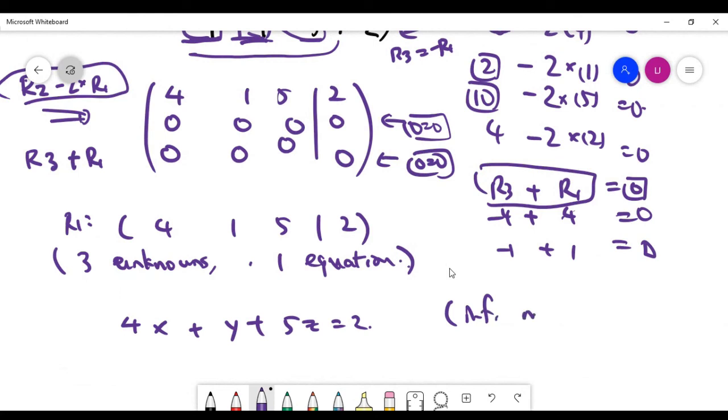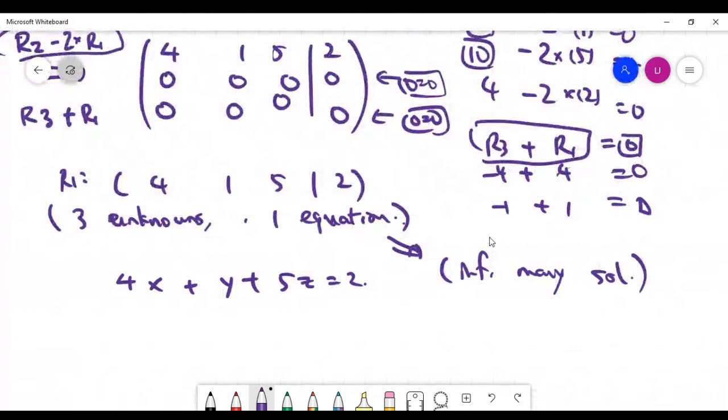And because it's a system with infinitely many solutions, based on the fact that you don't have enough number of equations to solve for all the unknowns, we can use some parametric forms to write all the solutions down.